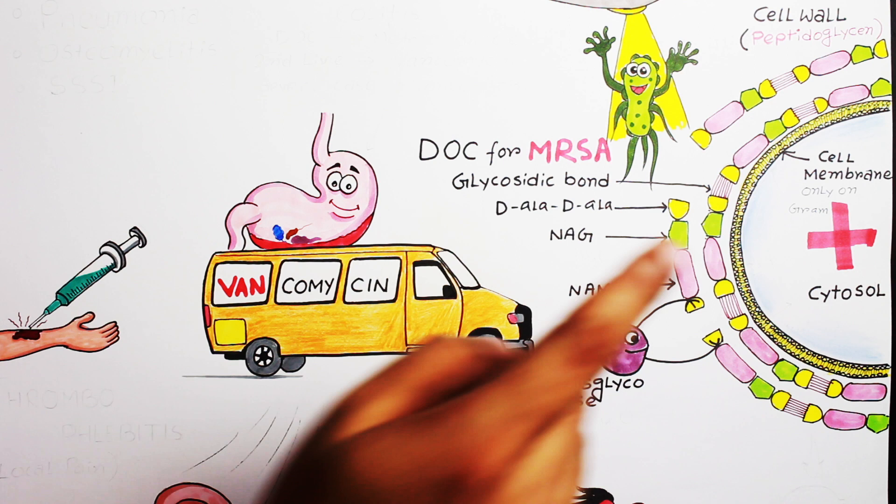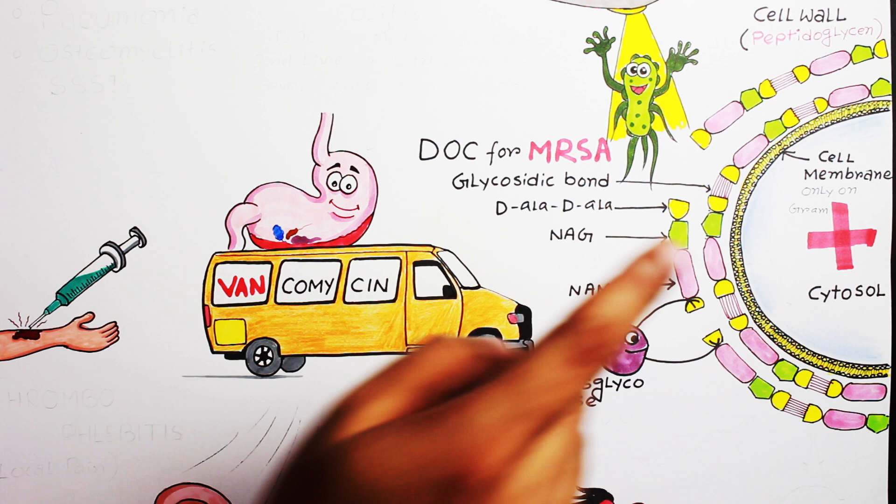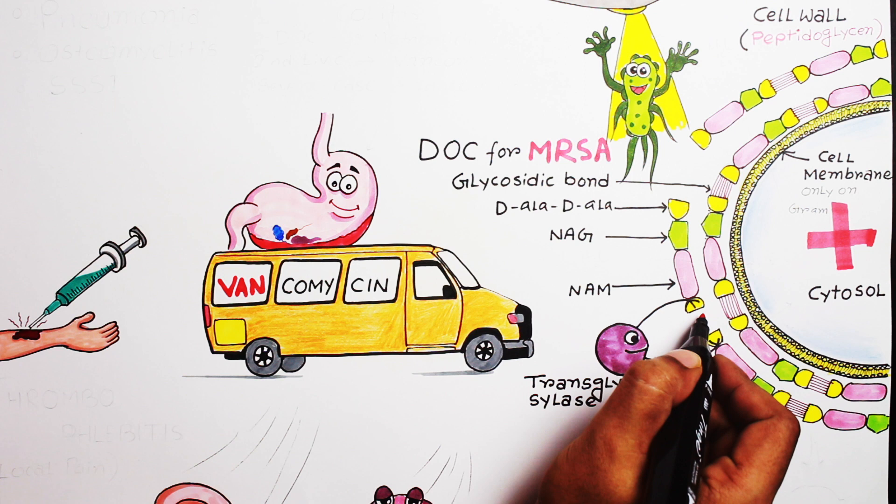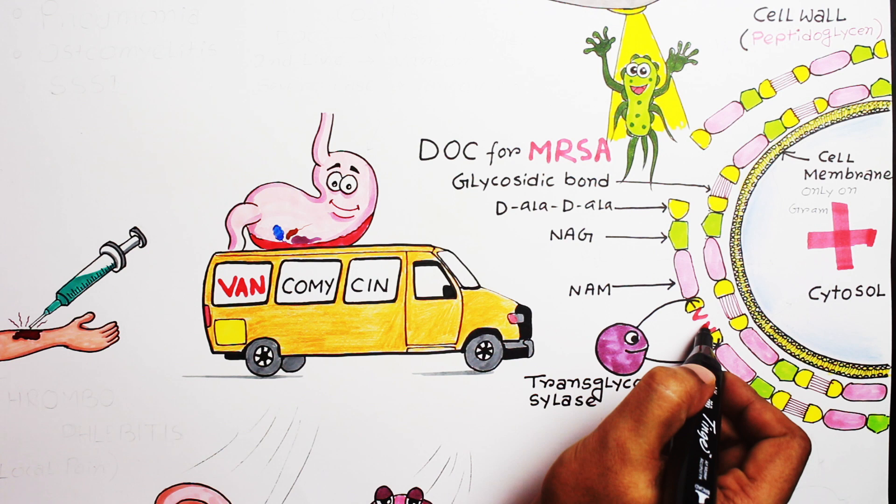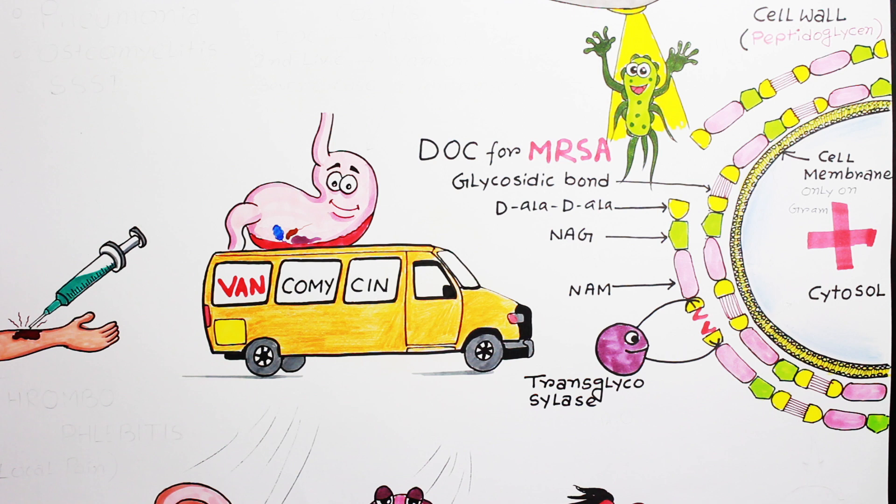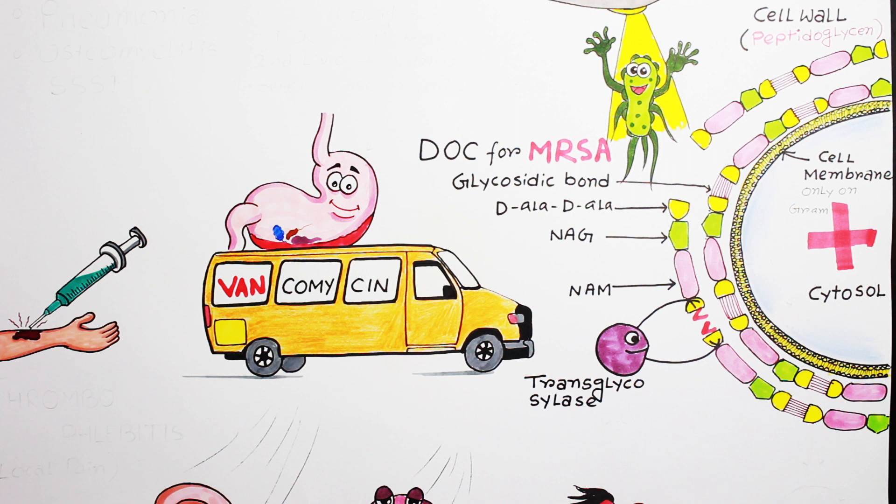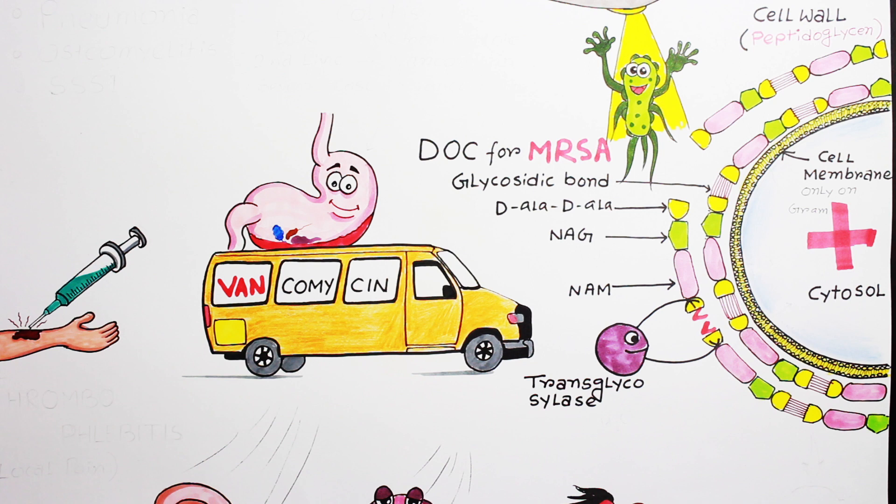Here you can see the transglycosylase enzyme which can capture and cross-link two separate NAM-NAG units. Now if you give vancomycin, what does it do? It firmly attaches with the D-alanine-D-alanine terminus so transglycosylase enzyme is unable to attach or cross-link these two D-alanine-D-alanine terminus. That's how vancomycin inhibits bacterial cell wall synthesis and eventually cell wall gets damaged or destroyed.